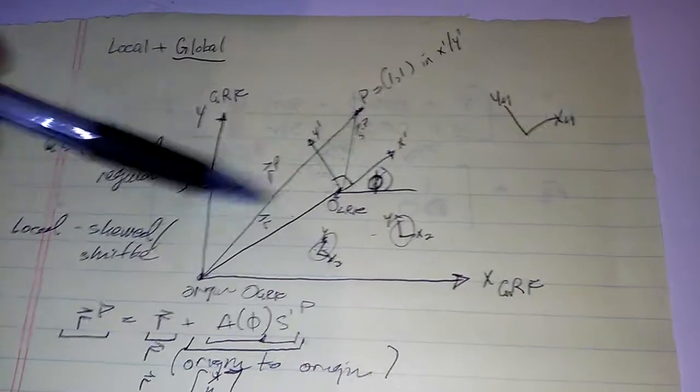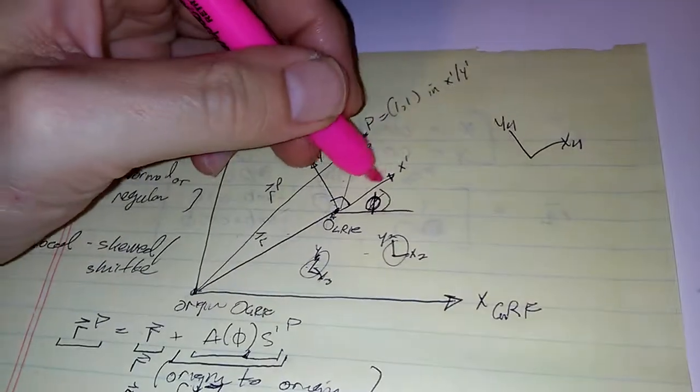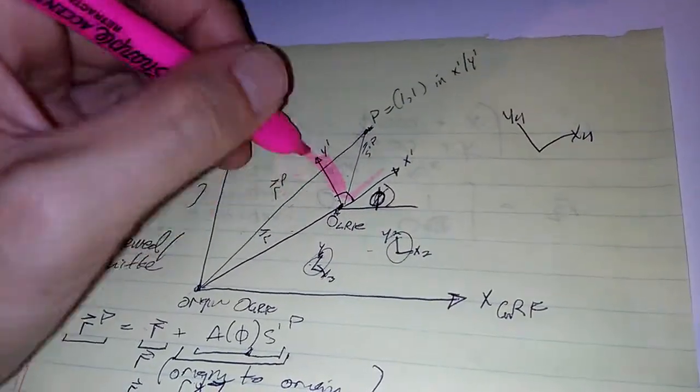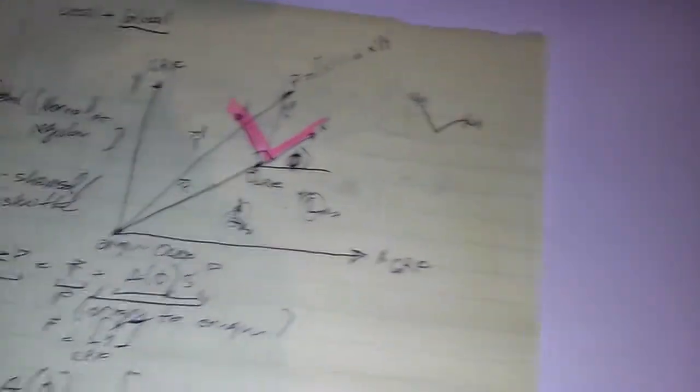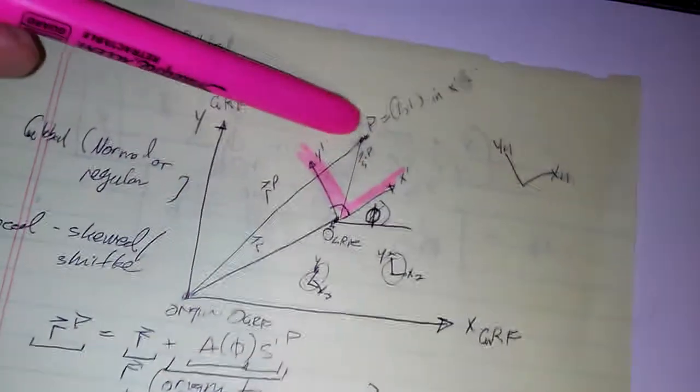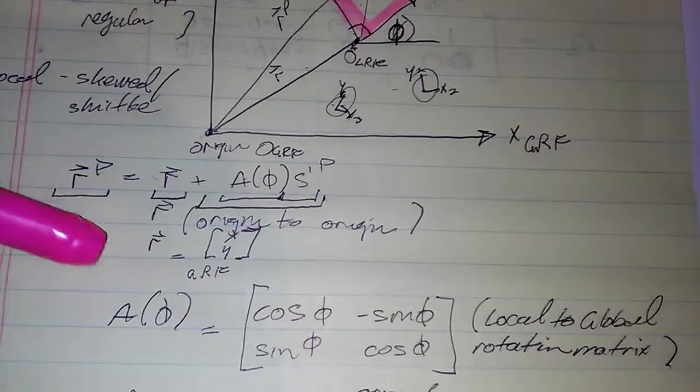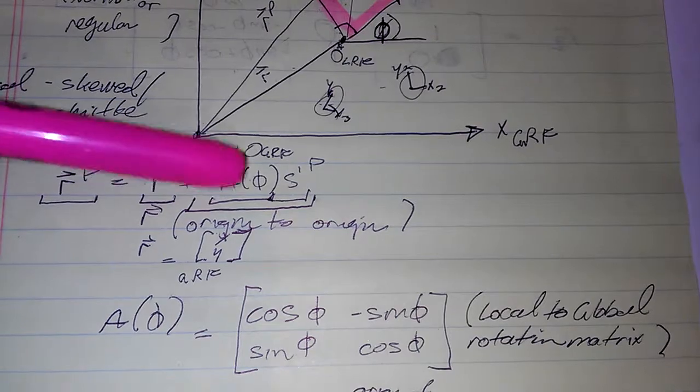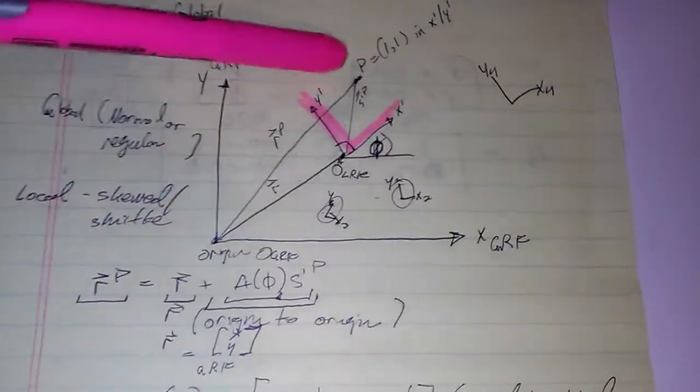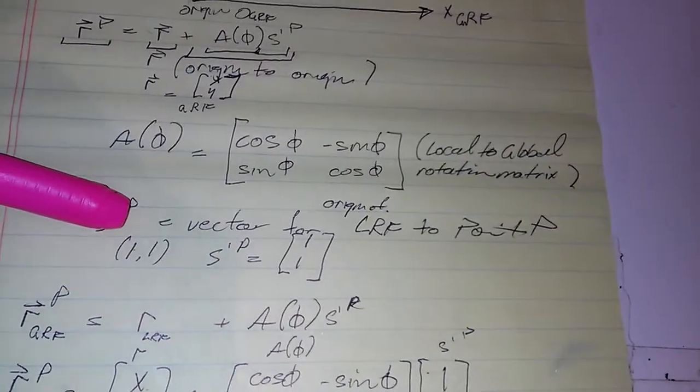So, there you have it, folks. We had a point, we had a global reference frame, we had a local reference frame right here. In fact, I'll give you just a little summary. Sorry, I'm going to hold the camera and do this at the same time. So, we had the global reference frame, we had the local reference frame. We had a point P at location in the local frame, x prime, y prime of 1, 1. We used the generalized equation, R plus A(φ) S prime P, to represent point P in the global reference frame.